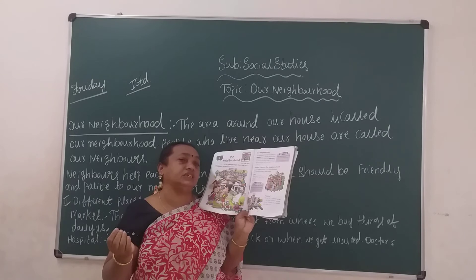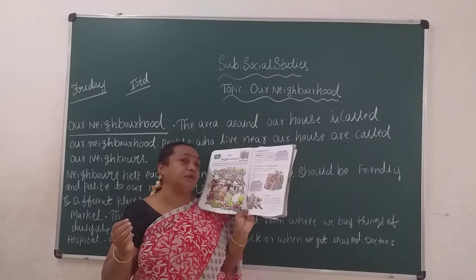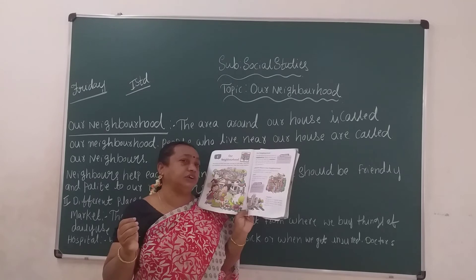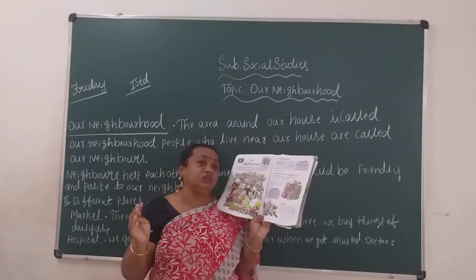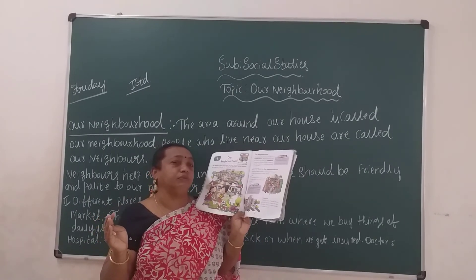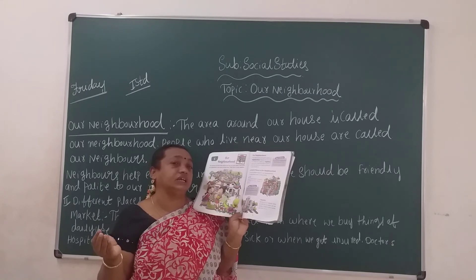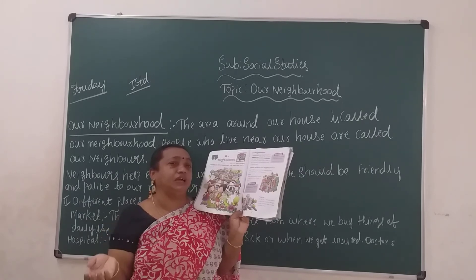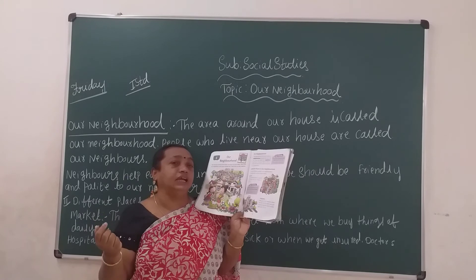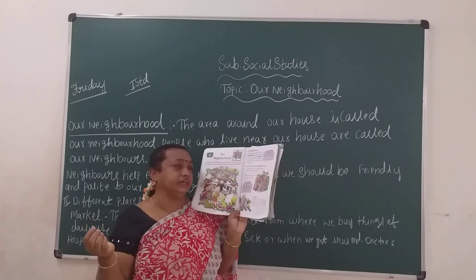We will learn about different places in our Neighborhood. Today we will learn two neighborhood places. First: Market. In the market, you can see many shops — cloth shops, fruit shop, vegetable shop, grocery shop, and many more. From the market, we can buy daily fresh things.